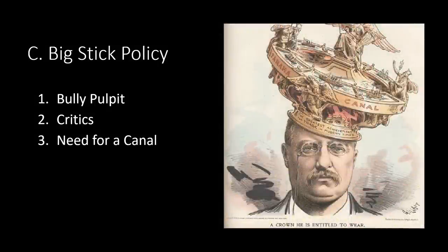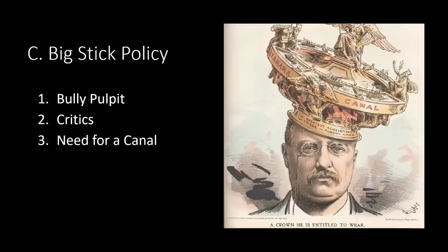Big Stick Policy: The Modern President. TR became the youngest president in US history at age 42. He believed in using what he called the 'bully pulpit' — if you don't get your way, go before the American people and use the press to convince Congress. TR also believed in the old African proverb: 'Speak softly and carry a big stick and you shall go far.' In diplomacy, you speak softly first; if that doesn't work, you hit them with the big stick. Roosevelt did have his critics who believed he was too bombastic, too loud, and didn't care whom he insulted by name-calling. The Spanish-American War had intensified American interest in a canal through Central America.